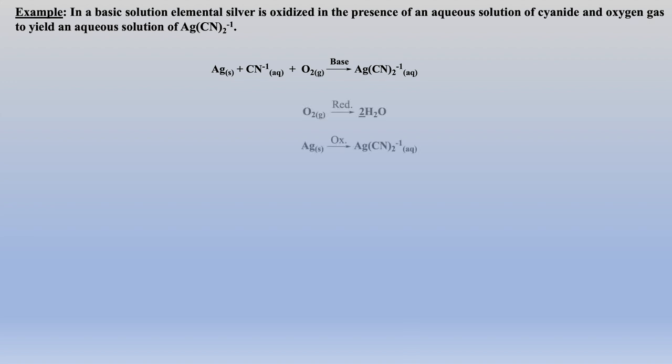Before we use our nomenclature, we will write an unbalanced equation for the word problem. Look at how I have written 'base' on the arrow so that we know we are working in a basic solution. Now we will split the equation into two half-reactions: one is the reduction reaction and one is the oxidation reaction. We will use a simple method to balance both sides.